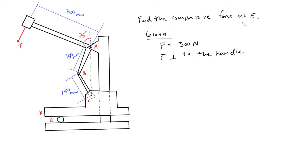In this machine example, we're trying to find the compressive force at E, which is basically compressing this metal ball. We're applying a force at the handle, F, which is 300 newtons, and we're given that the force is perpendicular to the handle.